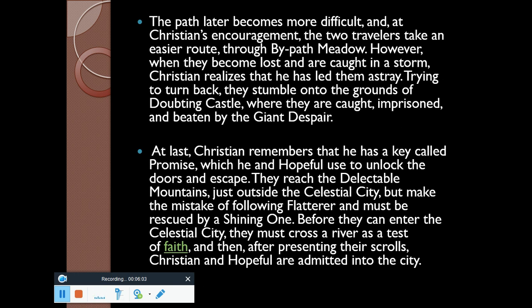When they become lost and caught in a storm, Christian realizes he has led them astray. As they are trying to turn back, they stumble onto the grounds of Doubting Castle, where they are caught and imprisoned and beaten by the giant Despair. A lost Christian remembers that he has a key called Promise, which he and Hopeful use to unlock the doors of the castle. They reach the Delectable Mountains just outside the Celestial City, but make the mistake of following the Flatterer and must be rescued by a shining one.